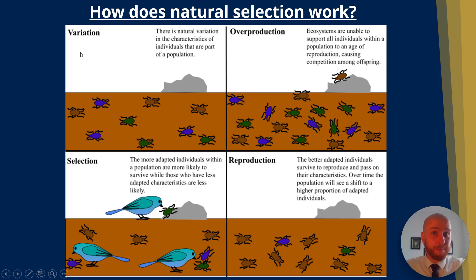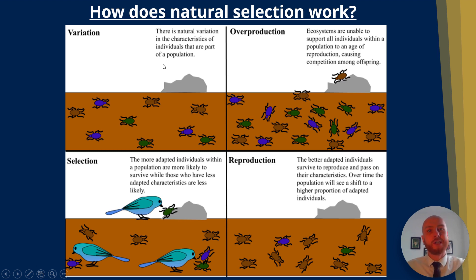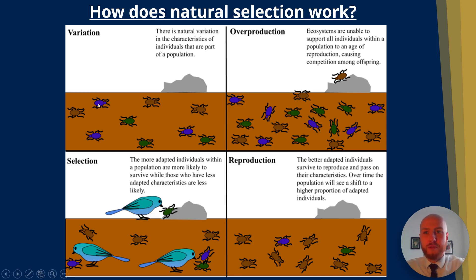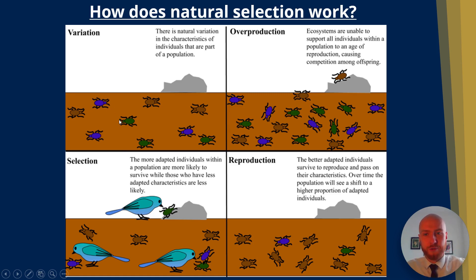Let's look at the beetle example. In the first diagram we can see there's variation created by mutations, and also during meiosis through crossing over and independent segregation. So there's natural variation in a population — we've got brown beetles, purple beetles, and green beetles, but the environment they live on is brown.